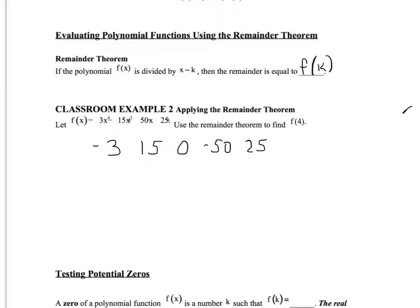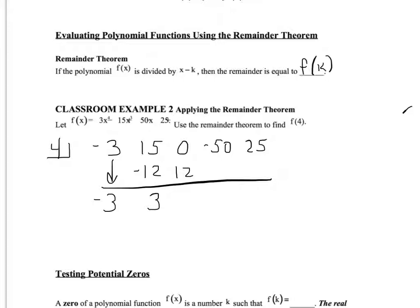Since we want to evaluate at x equals 4, our divisor is 4. Notice this is not following an x, so we don't change any signs — if it asks to find f(4), just use 4 as your divisor. Bring down the first term: negative 3. Multiply by 4: negative 12. Add 15 and negative 12: positive 3. 3 times 4 is 12; 0 plus 12 is 12. 12 times 4 is 48, and negative 50 plus 48 is negative 2. Negative 2 times 4 is negative 8, giving 17 in the remainder spot.